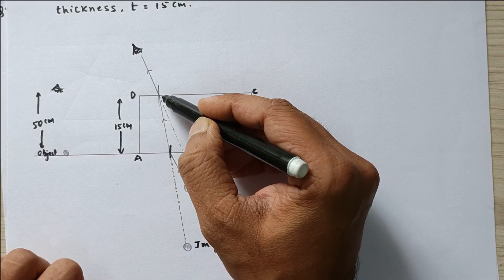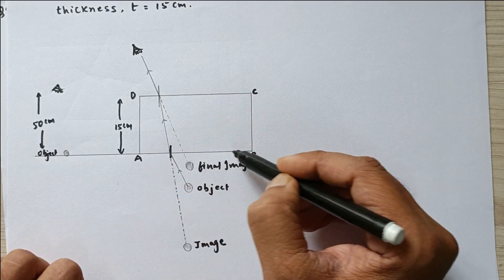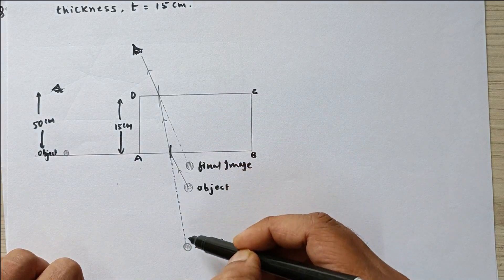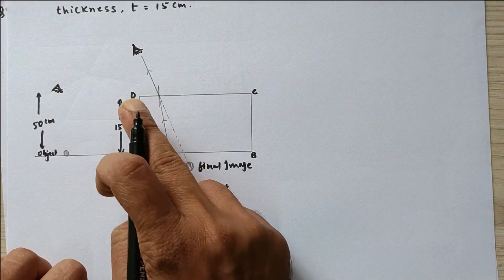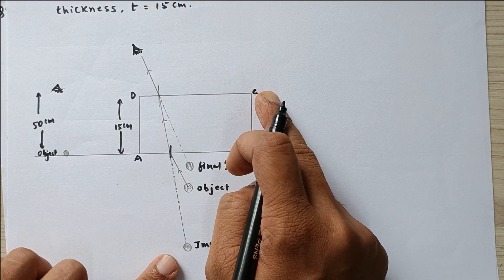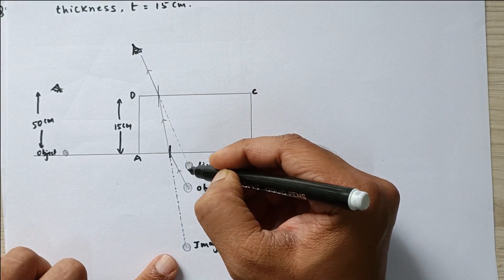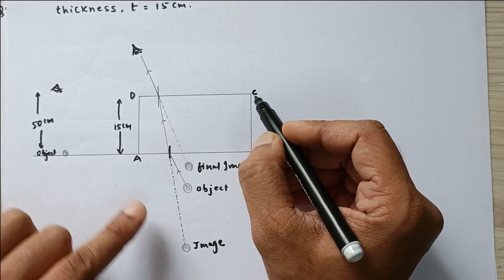Now this ray which is actually the refracted ray for this surface behaves as an incident ray for this surface which appears to be coming from here. So this behaves as an object for CD. And finally if you sketch the refracted ray backwards, this is the final image for surface CD.